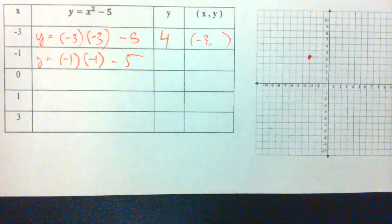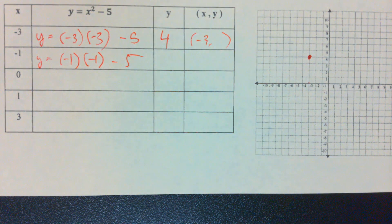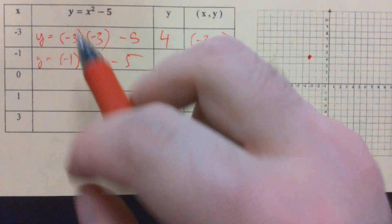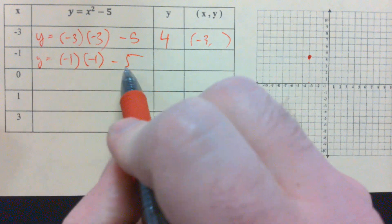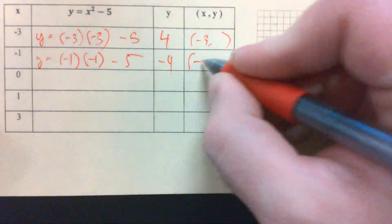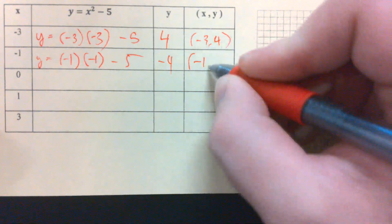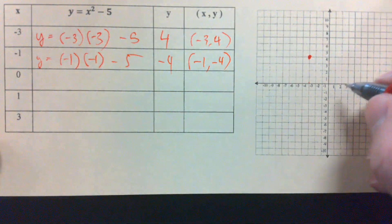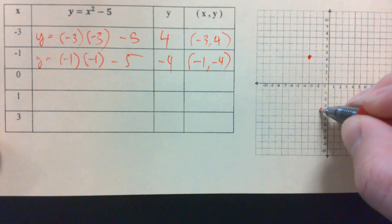We plug in negative 1. What's negative 1 times negative 1? Positive 1. 1 times 1, right? Just 1. And 1 minus 5 gives me what? Negative 4. Negative 1, negative 4. All the way down there.